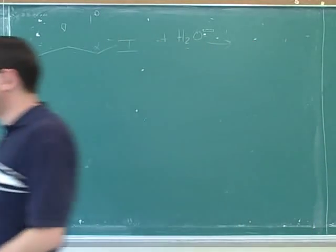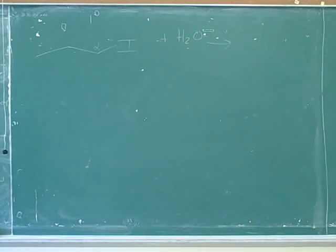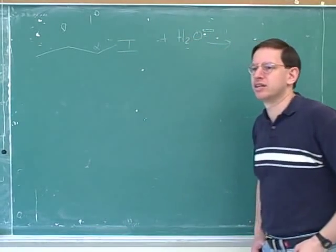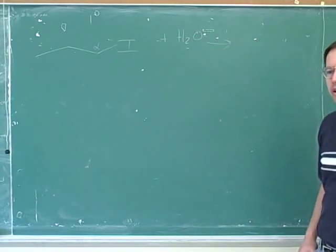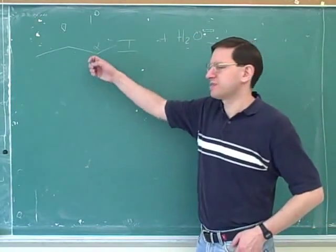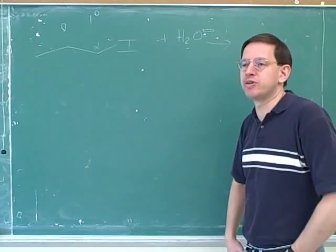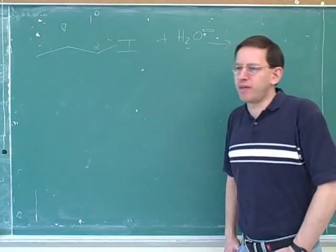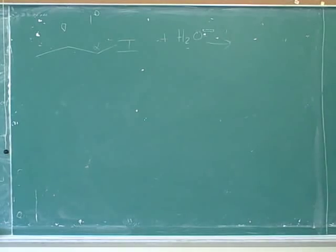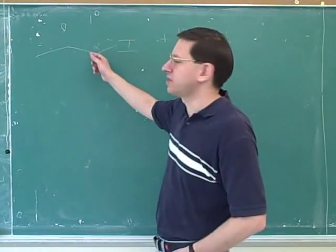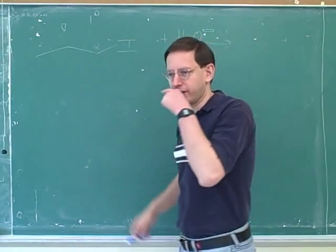Let's discuss a little bit more why we can't get a reaction here. First of all, why can't we do an SN1 here? What is it about this substrate that makes it impossible to do an SN1? The table says we're not going to do it, but why does the table say that? This substrate can never do an SN1.